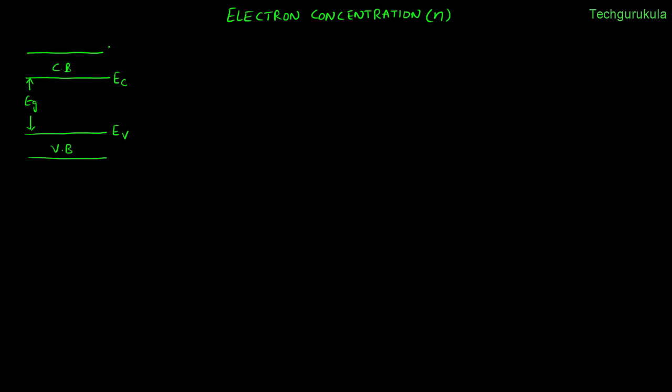We are going to call this EC top — the top edge of conduction band — and EV bottom — the bottom edge of the valence band. In order to find the electron concentration in the conduction band, because that's the concentration which will contribute to the conduction of electric current, that concentration is important for us.